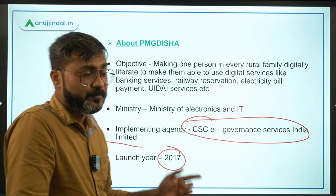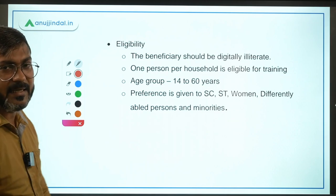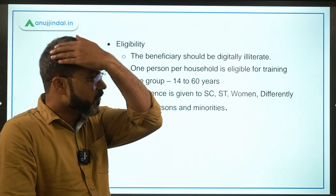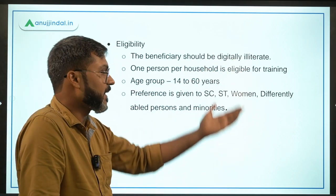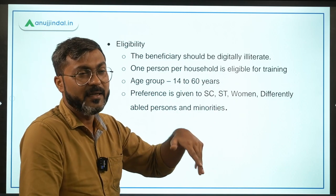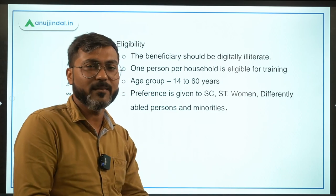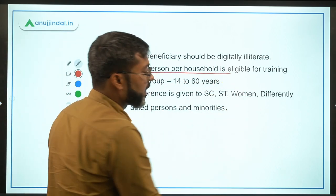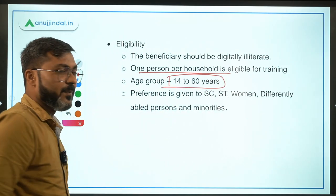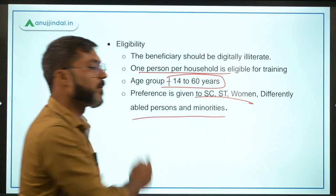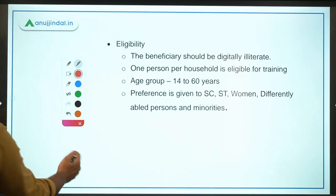Now regarding eligibility — the person should be digitally illiterate. One person per household is eligible for training. The age group should be between 14 to 60 years, and preference will be given to SC/ST, women, differently-abled persons, and minorities in the households.